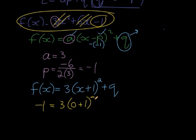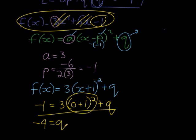And that will give us the equation to find q with. So we just solve negative 1. 0 plus 1 is 1, 1 squared is 1 times 3 is 3. So subtract the 3 on both sides and we get negative 4. So q is equal to negative 4.